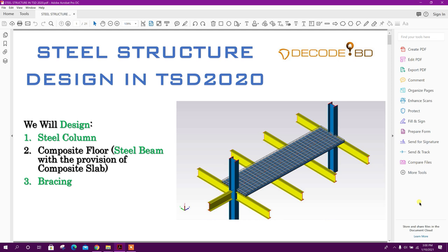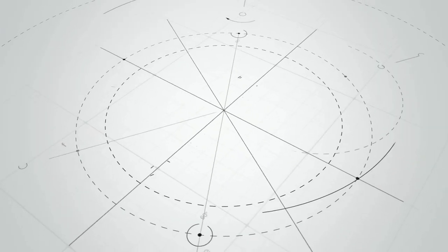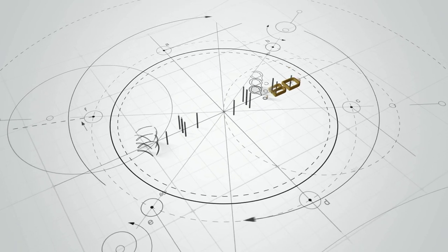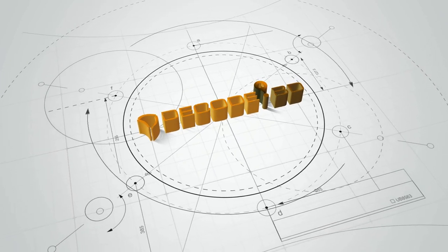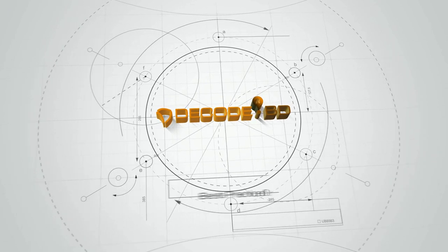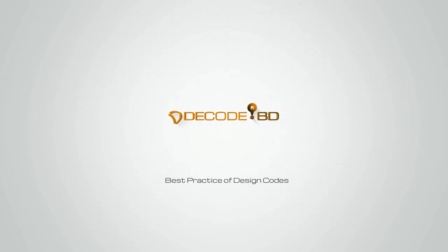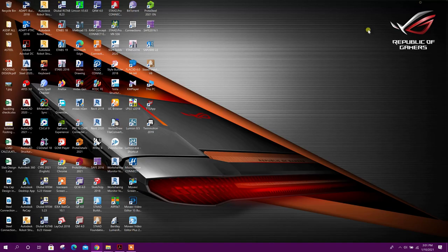Bismillahirrahmanirrahim. Dear viewers, today we will design a steel structure in Tekla Structural Designer 2020. In this tutorial we will design steel columns and a composite floor system — that means steel beams with the provision of composite slab and bracing. Let's start by opening the TSD program.